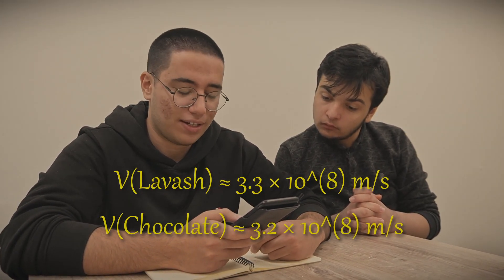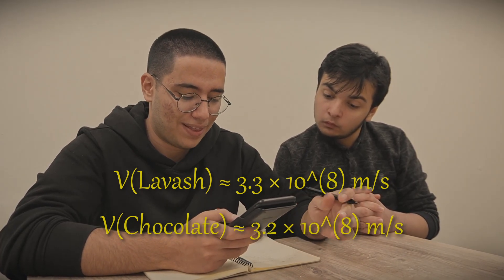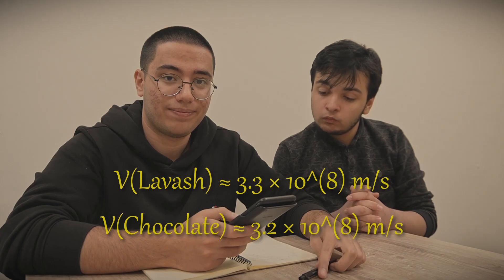We got our speed of light for chocolate as 3.2 times 10 to the power of 8 meters per second. Comparing them, both results are off, but chocolate is a slightly better detector than lavash. We cannot trust either of them. We can blame our assistant, and also our microwave system — we didn't get the frequency more accurately; we got our frequency from the microwave data sheet. In addition, we couldn't identify our spots precisely, so there must be some large errors and uncertainty. Now it is time to kick my assistant out.